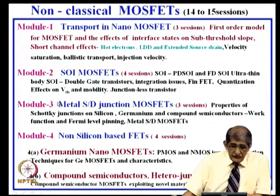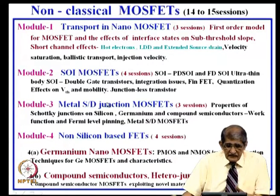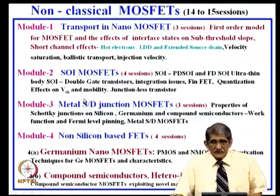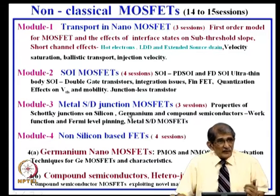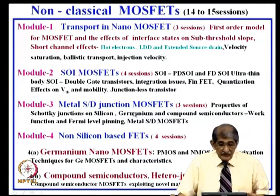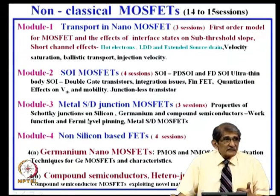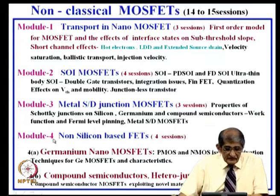Module 3 focuses on metal source-drain junction MOSFETs. Instead of a P-N junction, we use metal junctions — Schottky barrier junctions or ohmic contacts. We focus on properties of Schottky junctions on silicon, germanium, and compound semiconductors, because Module 4 covers non-silicon based MOSFETs and FETs.